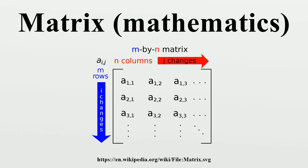Matrices are commonly written in box brackets or large parentheses. The specifics of symbolic matrix notation vary widely, with some prevailing trends. Matrices are usually symbolized using uppercase letters, while the corresponding lowercase letters, with two subscript indices, represent the entries. In addition to using uppercase letters to symbolize matrices, many authors use a special typographical style, commonly boldface upright, to further distinguish matrices from other mathematical objects. An alternative notation involves the use of a double underline with the variable name, with or without boldface style.